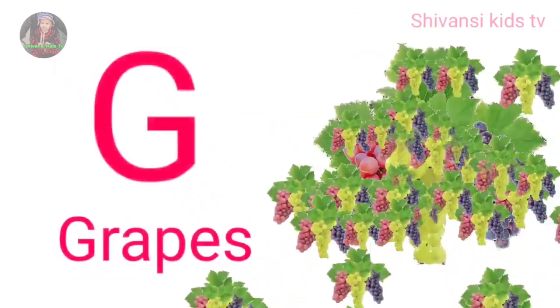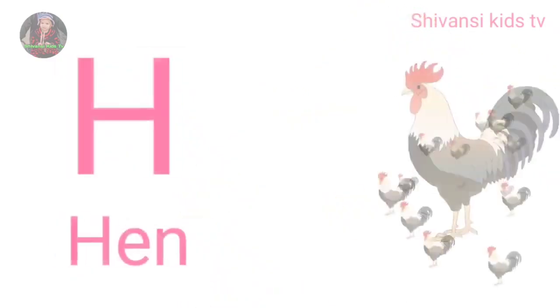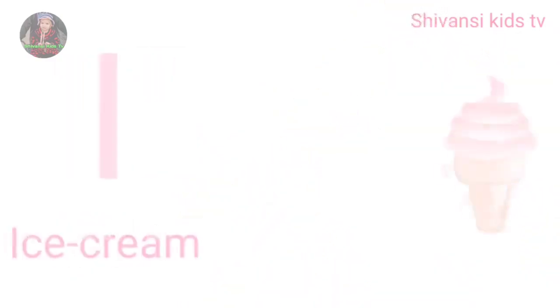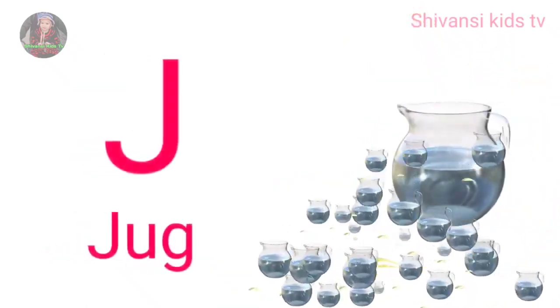F for fish, G for grapes, H for hand, I for ice cream, J for jug.